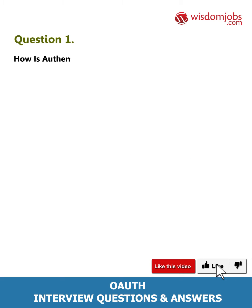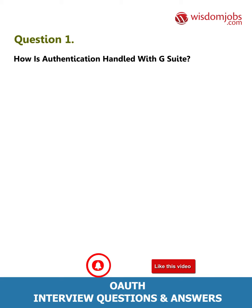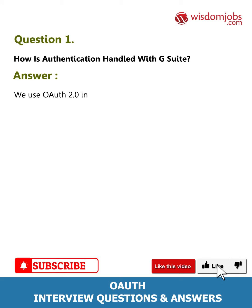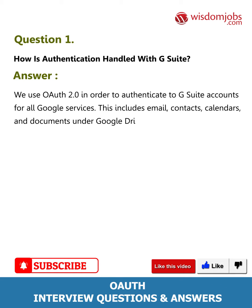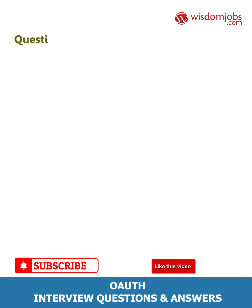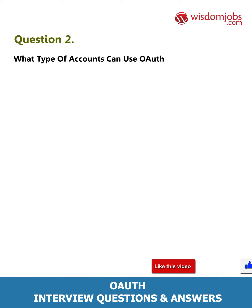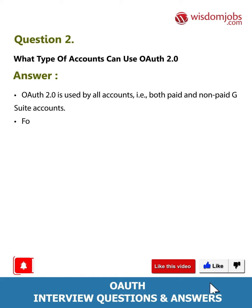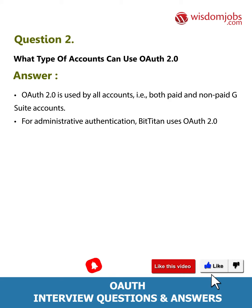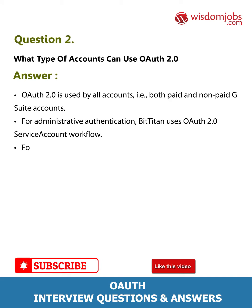Question 1: How is authentication handled with G Suite? Answer: We use OAuth 2.0 in order to authenticate to G Suite accounts for all Google services. This includes email, contacts, calendars, and documents under Google Drive. Question 2: What type of accounts can use OAuth 2.0? Answer: OAuth 2.0 is used by all accounts, i.e., both paid and non-paid G Suite accounts. For administrative authentication, BitTitan uses the OAuth 2.0 service account workflow.